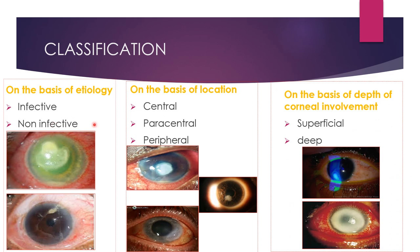Corneal ulcers can be classified in different ways. On the basis of etiology, they can be infective or non-infective. On the basis of location, they can be central, paracentral, or peripheral. On the basis of depth of corneal involvement, they can be superficial — involving the epithelium — or they can involve deeper layers like the stroma, Descemet's membrane, or the full-thickness cornea. Deeper ulcers can lead to descematocele formation or even corneal perforation.